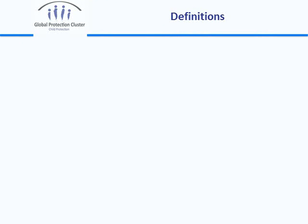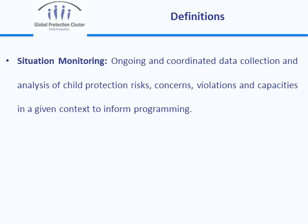Let's get to some fundamental definitions that will be with us throughout this course. The first is situation monitoring. Basically, it is an ongoing and coordinated data collection and analysis of child protection risks, concerns, violations, and capacities in a given context to inform programming. There are a few very important elements in this definition. The first is that it needs to be ongoing — an assessment, for example, which is something you do one-off, is not considered situation monitoring because it doesn't give you a sense of change or trends.